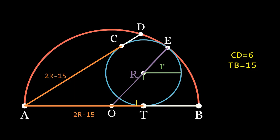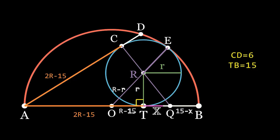Now from the center of the blue circle, drop a perpendicular to the point of tangency T, and from point C draw a line through the center of this circle, denoting its point of intersection with AB as Q. Here, if we denote the TQ segment as X, we get to the following.